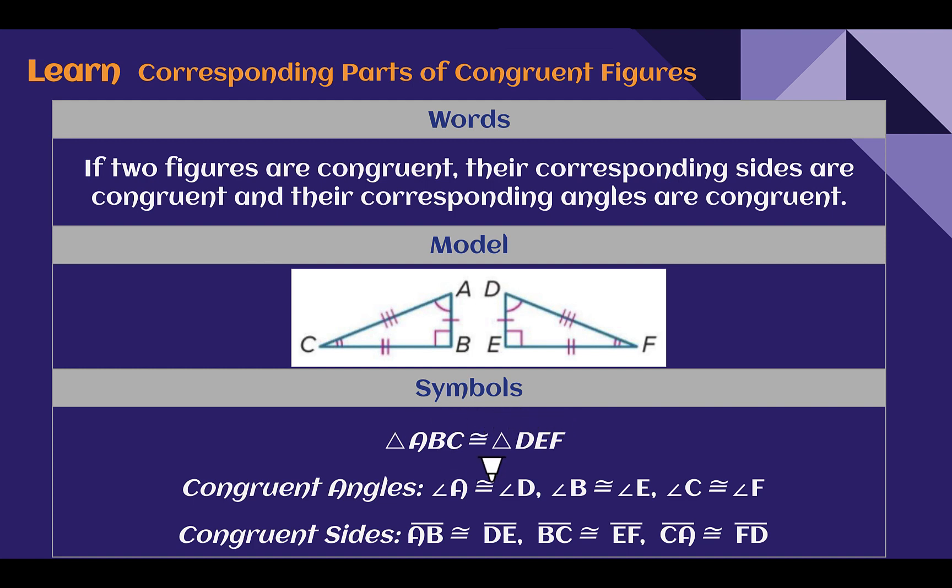Our angles, A is congruent to D, we can see that with our one arc here. B is congruent to E, both have the right angle. C and F both have double arcs. For our sides, AB is congruent to DE, BC and EF both have the two tick marks, and CA and FD have three tick marks.